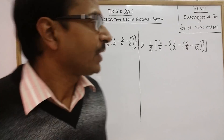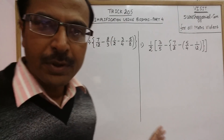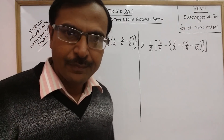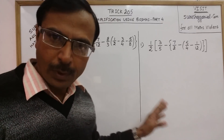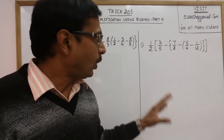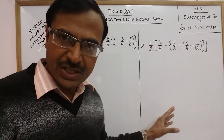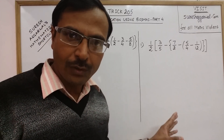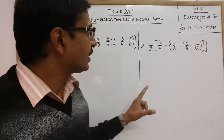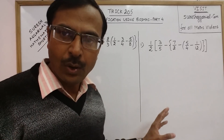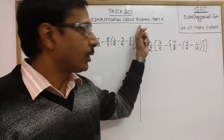Hello dear friends. In trick number 205, we are going to continue some more problems of simplification involving rational numbers using the formula of BODMAS.